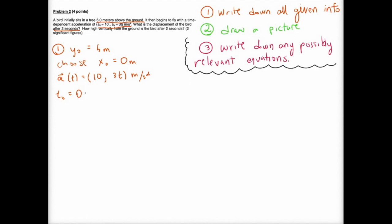The x component of the acceleration vector is 10 and the y component is 3t. Finally, we know that our final time is two seconds. I am choosing t₀ of zero seconds. If I wanted to make things more difficult I could choose t₀ equals two and t_final equals four seconds, but it's going to be a lot easier to choose t_initial equals zero seconds and t_final equals two seconds.